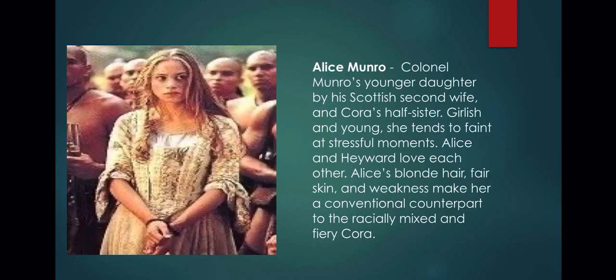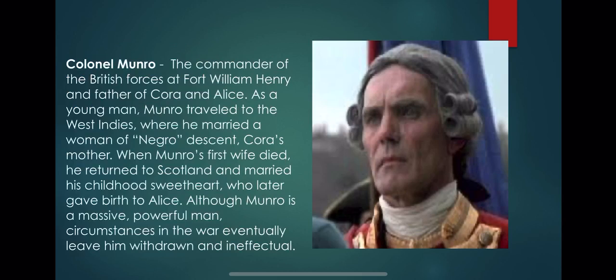Colonel Monroe is the commander of the British forces at Fort William Henry and the father of Cora and Alice. As a young man, Monroe traveled to the West Indies where he married a woman of Negro descent — Cora's mother. When his first wife died, he returned to Scotland and married his childhood sweetheart, who later gave birth to Alice. Although Monroe is a massive, powerful man, circumstances and the war eventually leave him withdrawn and ineffectual.